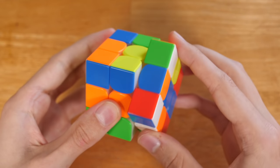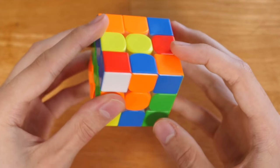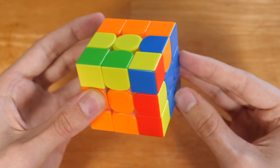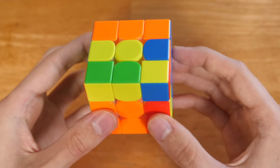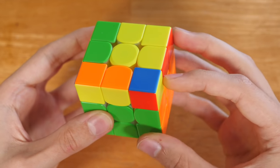Next he solves two more first layer corners completing the triple X cross, then he inserts the last pair.